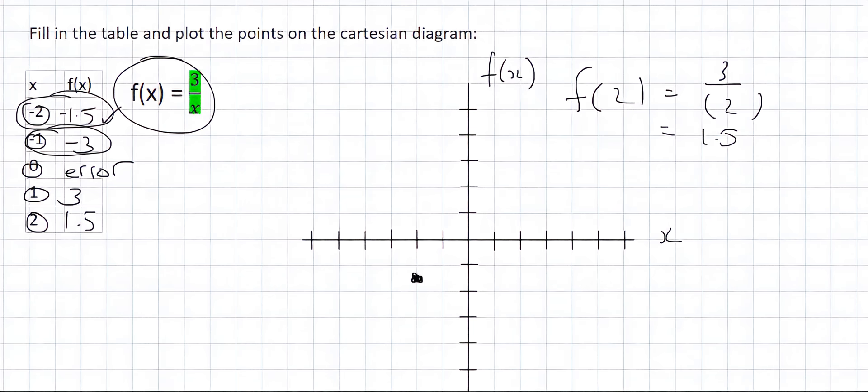The next point is going to be minus 1 and minus 3. So that's minus 1 and then 3 down, and that point's there. Then the error. Well, we can't really do anything with that, so don't stress.